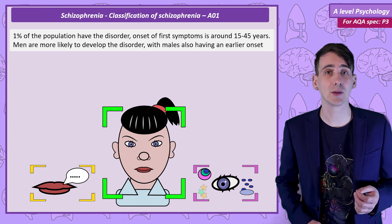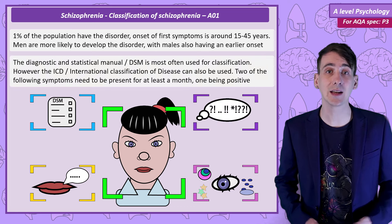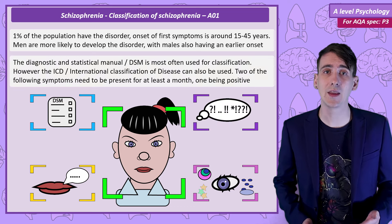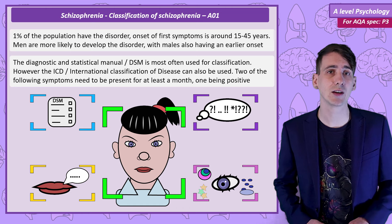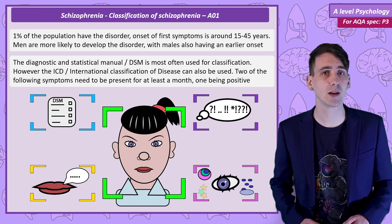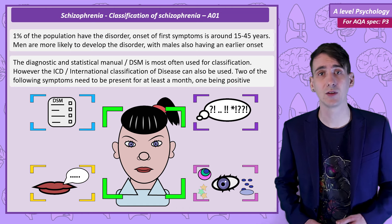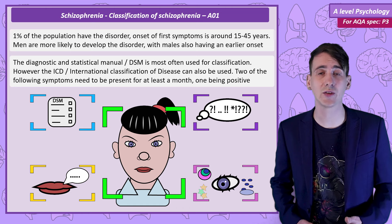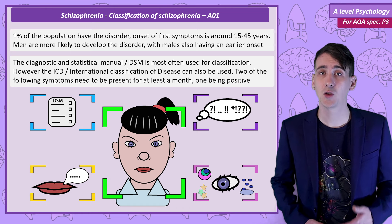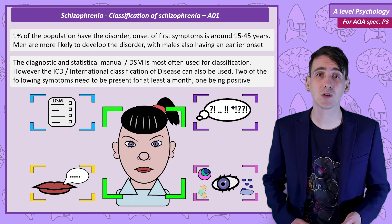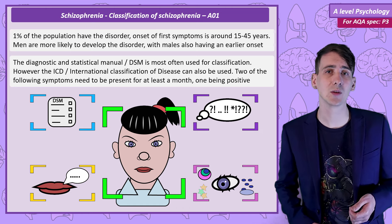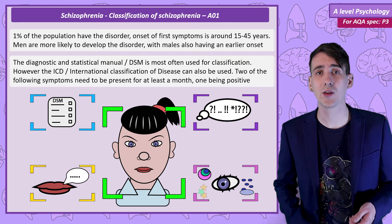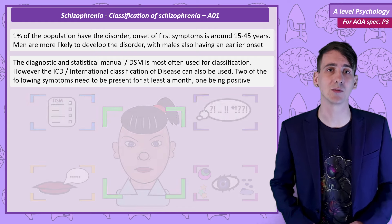Identification of these symptoms is the job of a clinician, and they'll be using a guide — either the Diagnostic Statistical Manual, known as the DSM-5, or the ICD, the International Classification of Diseases. To be diagnosed with schizophrenia, two of the following symptoms need to be present for at least a month, and one of the symptoms has to be a positive symptom.